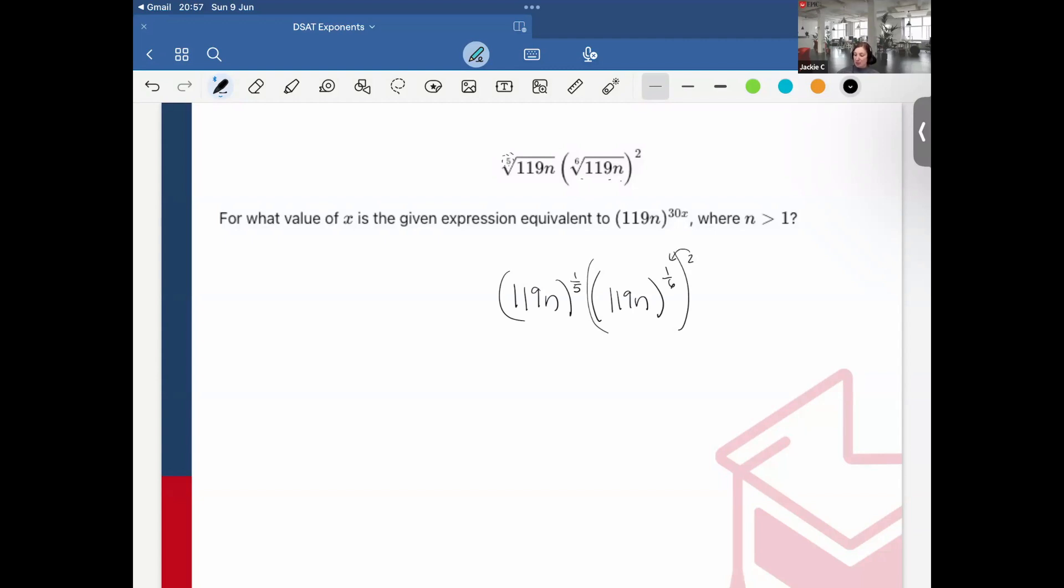This becomes multiplied. So essentially, it would be 119n over 2/6, which will reduce to one-third. So I'll say one-third n.